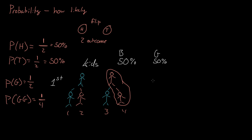If we do a little math, we see that the probability of having the first child be a girl is one half, and the probability of having the second child be a girl is also one half. So the probability of having two girls is one half times one half, which is just one out of four. We can actually do this for bigger things.